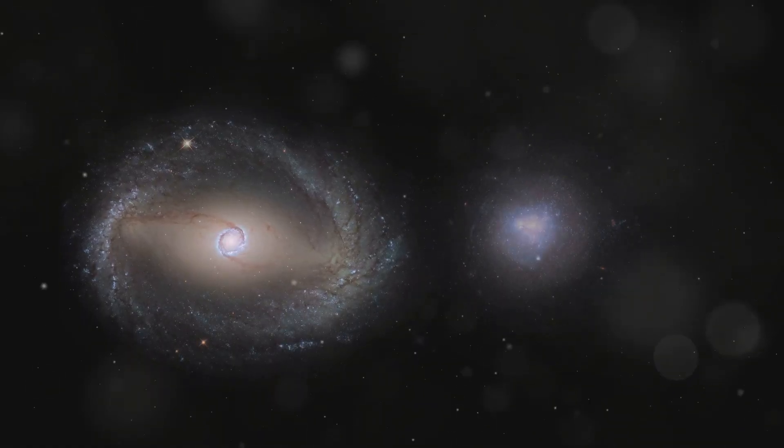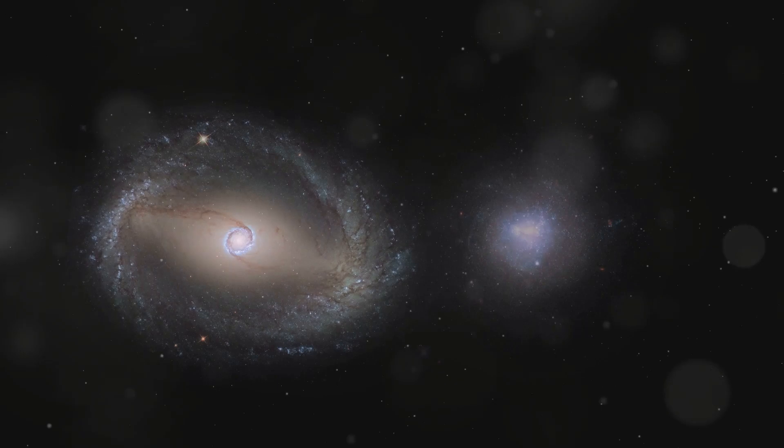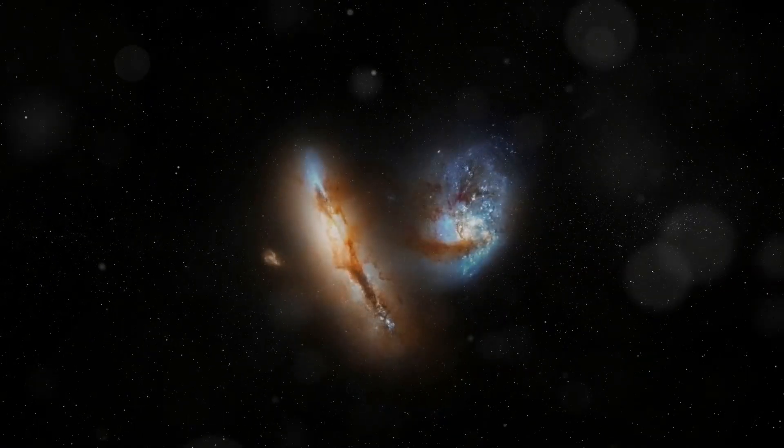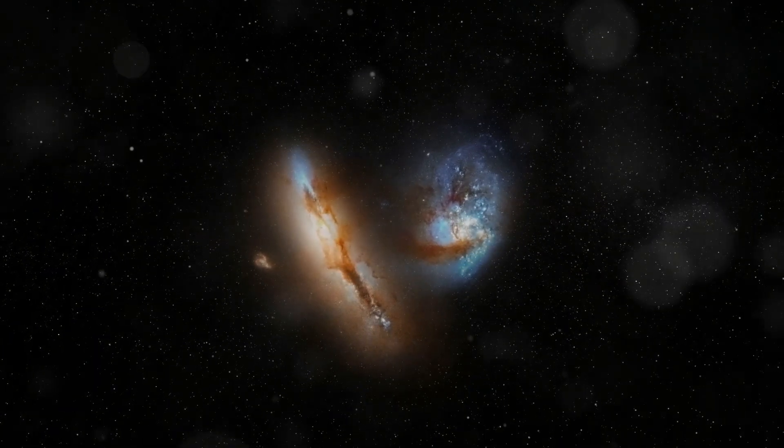This chaotic process, driven by gravity and chance encounters, shaped the destiny of our solar system. The formation of the solar system was a complex and chaotic process, a delicate balance between gravity, collisions, and the properties of the proto-planetary disk.